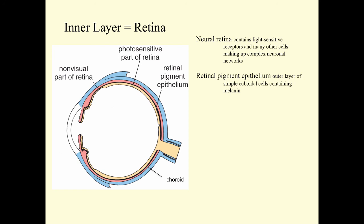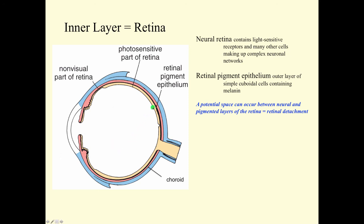The retinal pigment epithelium is the outer layer of the retina — a simple layer of cuboidal cells containing a lot of melanin. The neural retina extends from the ora serrata all the way around the back of the eye, covering roughly 75–80%. There is a potential space that can occur between the neural and pigmented layers of the retina, which can lead to retinal detachment.